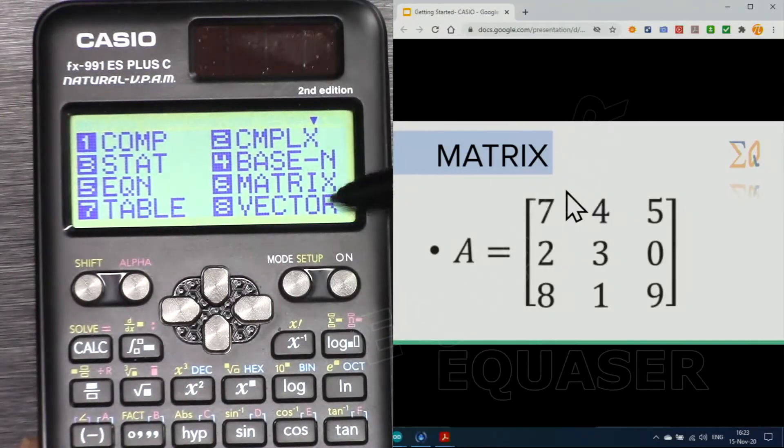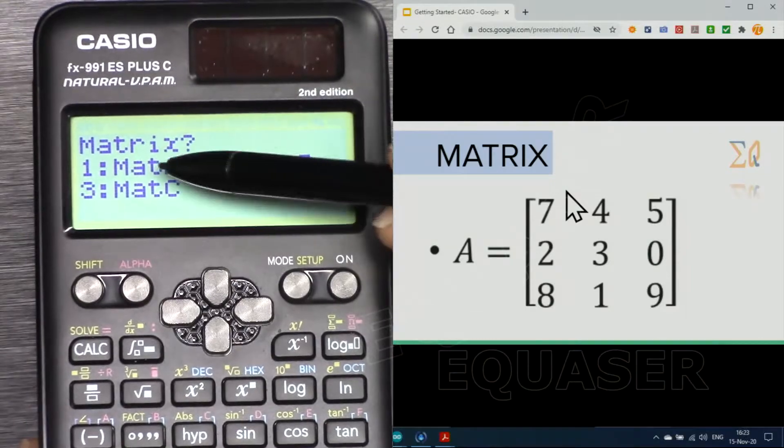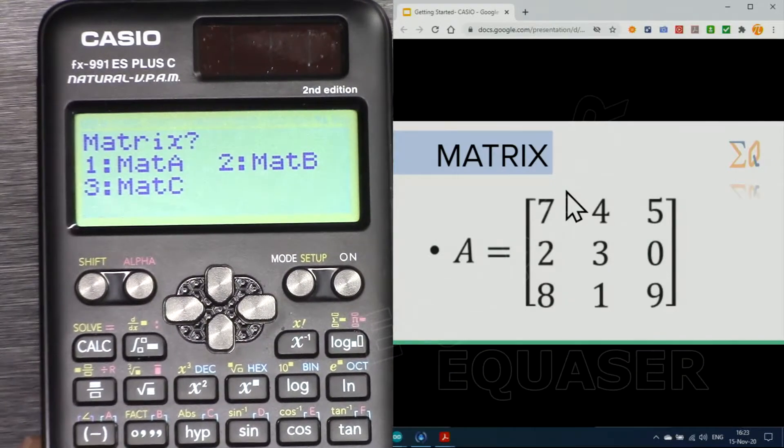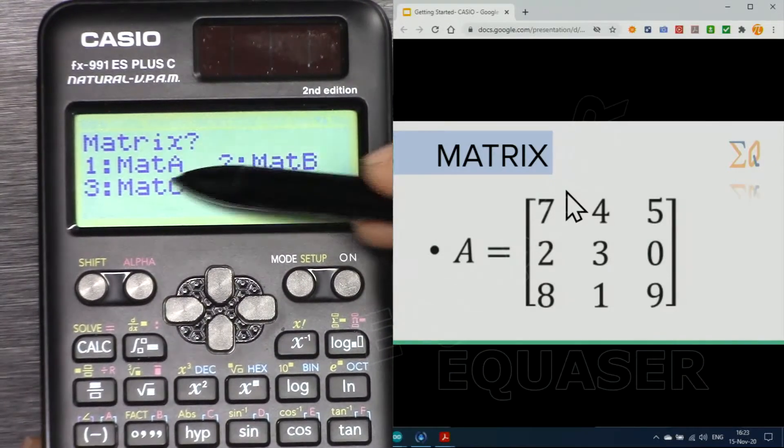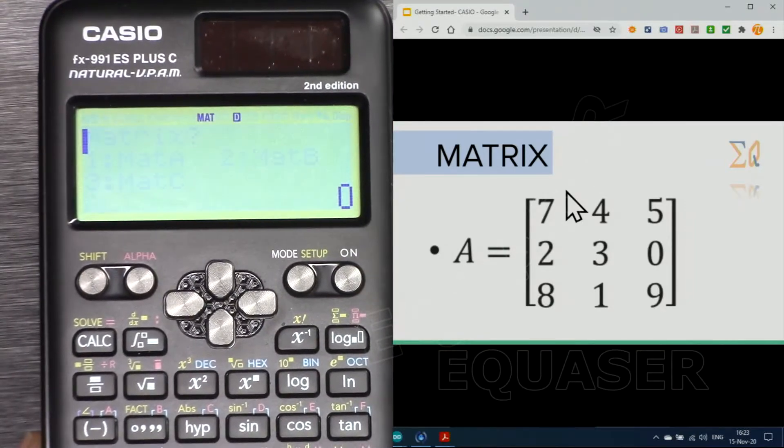Setup and then select matrix number six and we are in matrix mode. In this calculator we can store three matrices: matrix A, B, and C, and do the calculation.